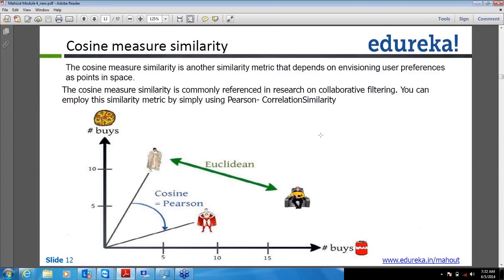So don't be surprised if you're not able to find the cosine measure similarity in the system and APIs. Don't think that you have some mistake in installing or that data is not there in the Mahout side.